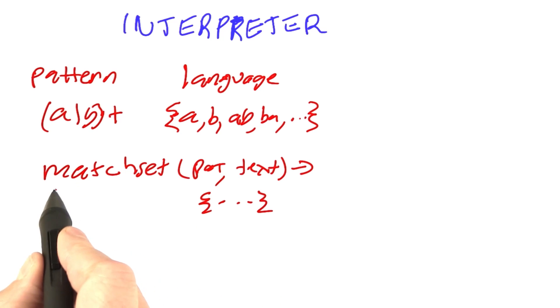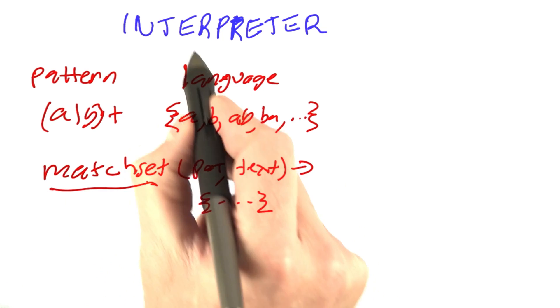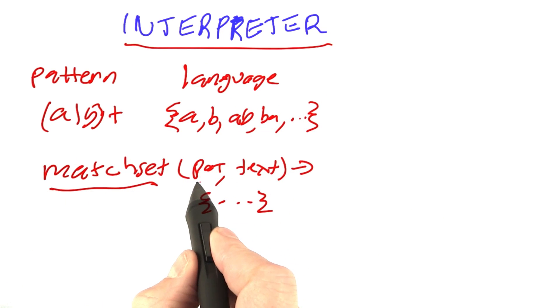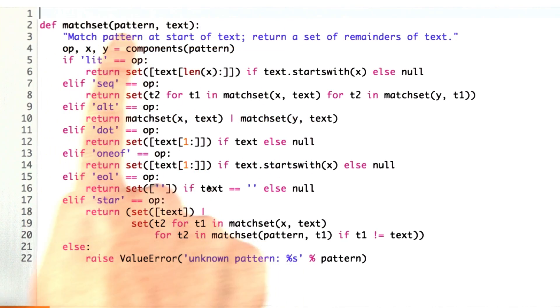We say that MATCHSET is an interpreter because it takes a description of the language, namely a pattern, as a data structure and operates over that pattern. Here's the definition of MATCHSET. You see it looks at the pattern, breaks out its components, and then the first thing it does is this big case statement to figure out what type of operator we have and to do the appropriate thing.